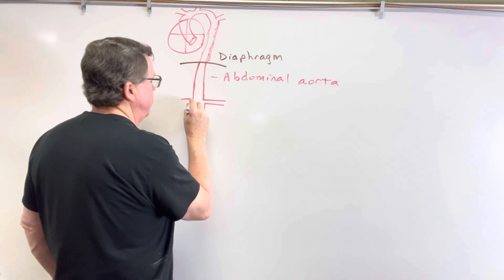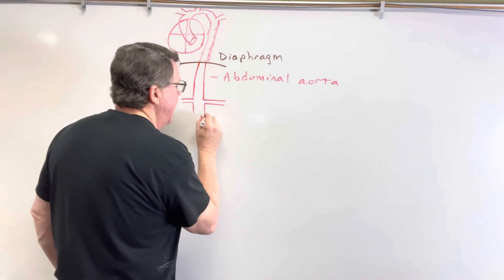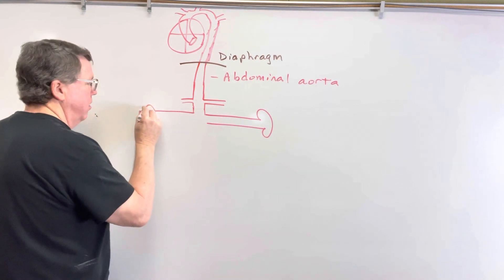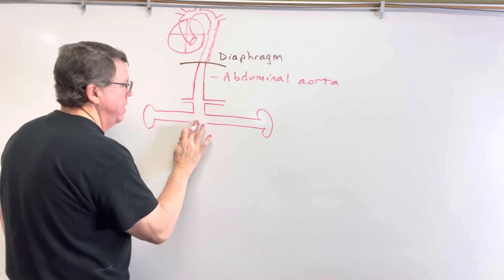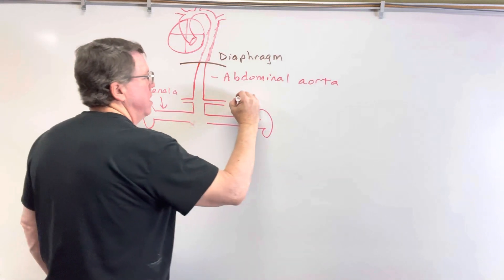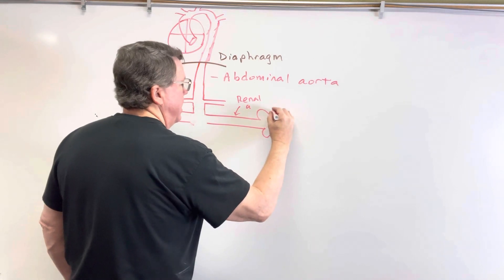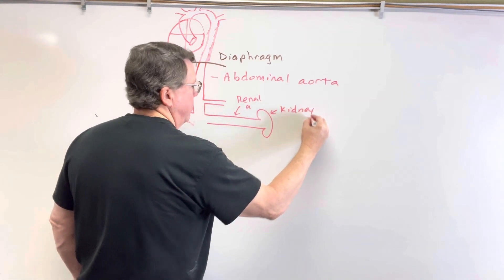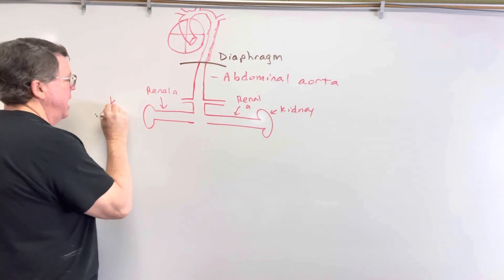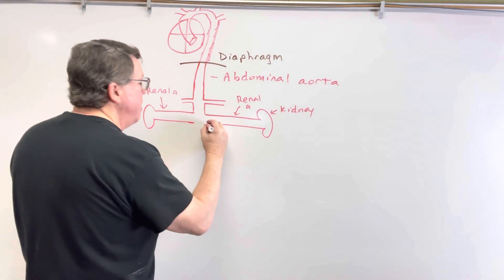I am going to put the lumbar artery here, which we won't be too focused on right now. Then you have what we call the renal arteries. The renal arteries go out to the kidneys — this is my right renal artery and this is my left renal artery — going to the right and left kidneys. Normally your kidneys are at slightly different levels, but for this video I'm putting them at the same level.